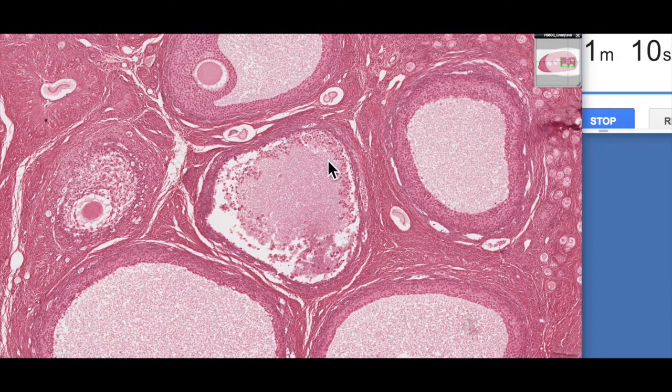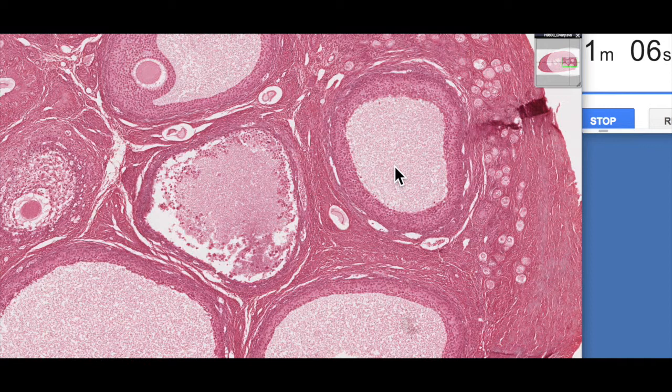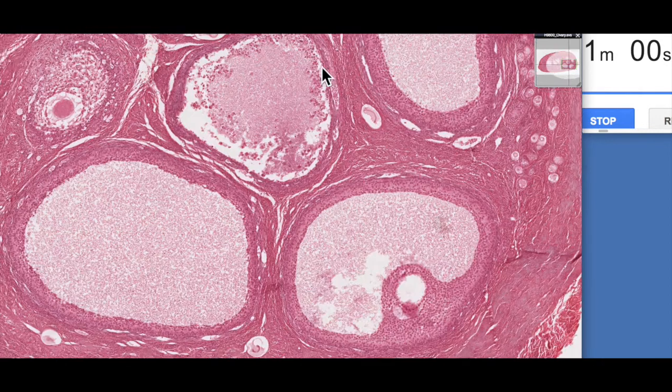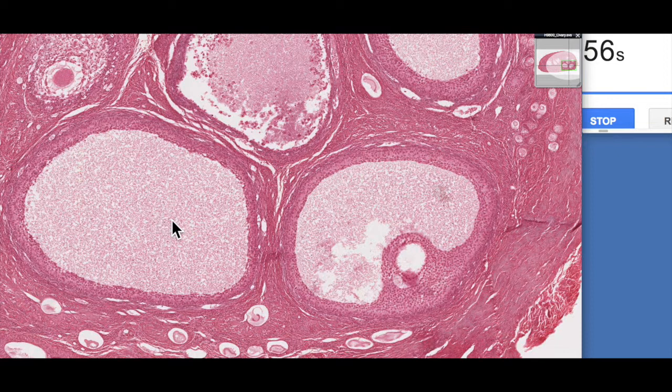Here we've got some other antral follicles. You can see that because antral follicles are quite large, it's actually quite rare to get a section with the oocyte in the middle. So most of the time you see these big spaces without any oocytes, but they are probably present, just not in this planar section.